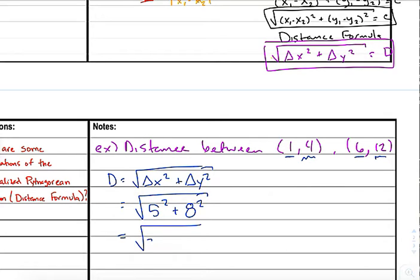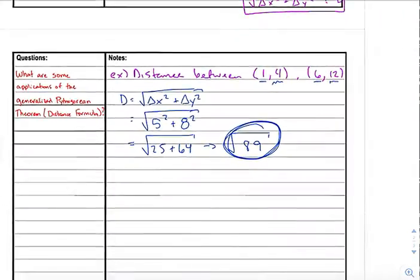Again, we're just using the Pythagorean theorem generalized now to points. So, if we continue this, we have 25 plus 64, which is the square root of 89. We're not worried about shortening that or trying to simplify it at that point. We're just trying to get some examples. So, there's certainly one example there.